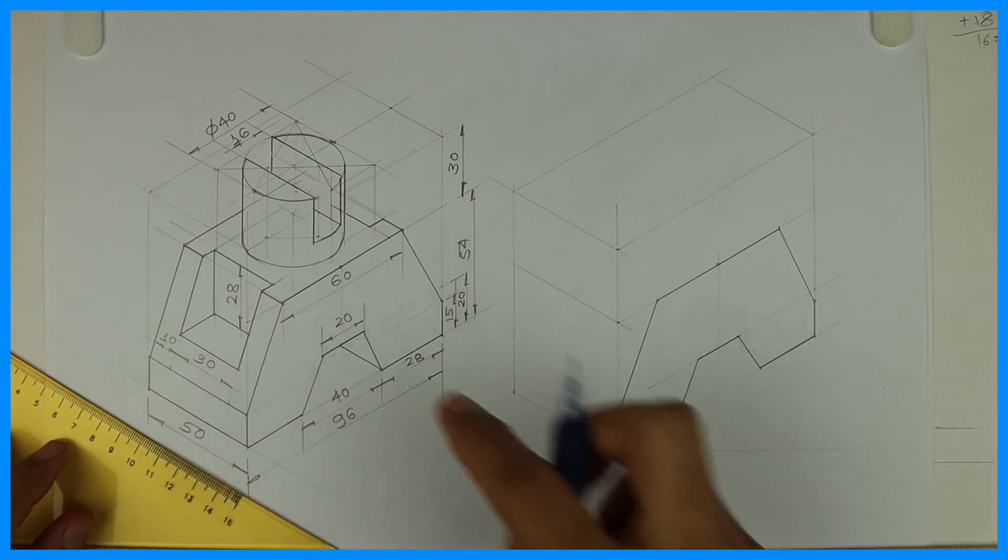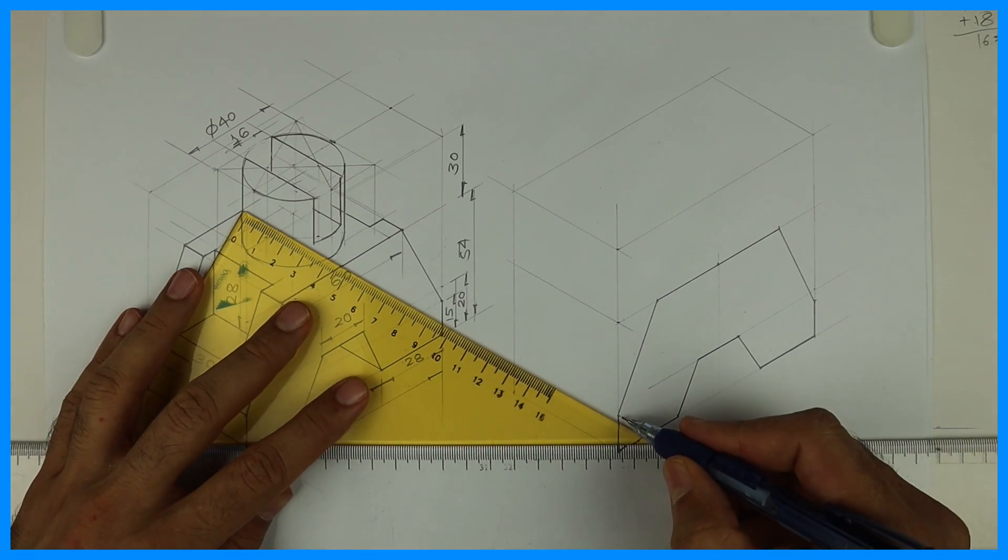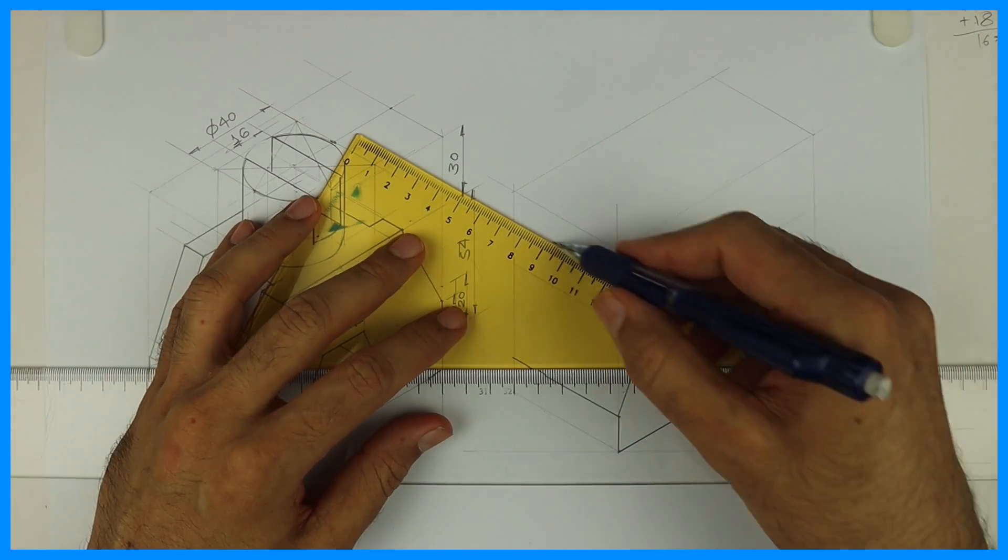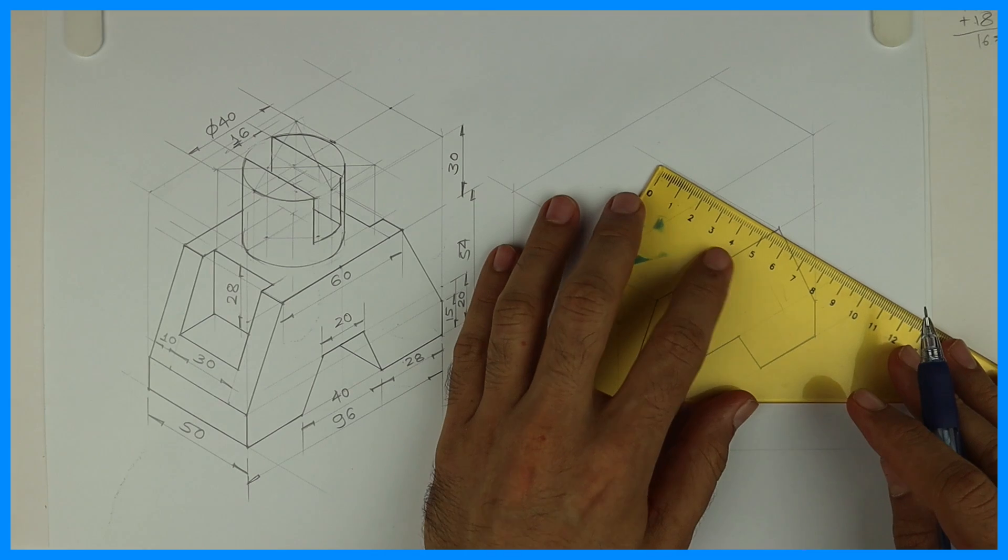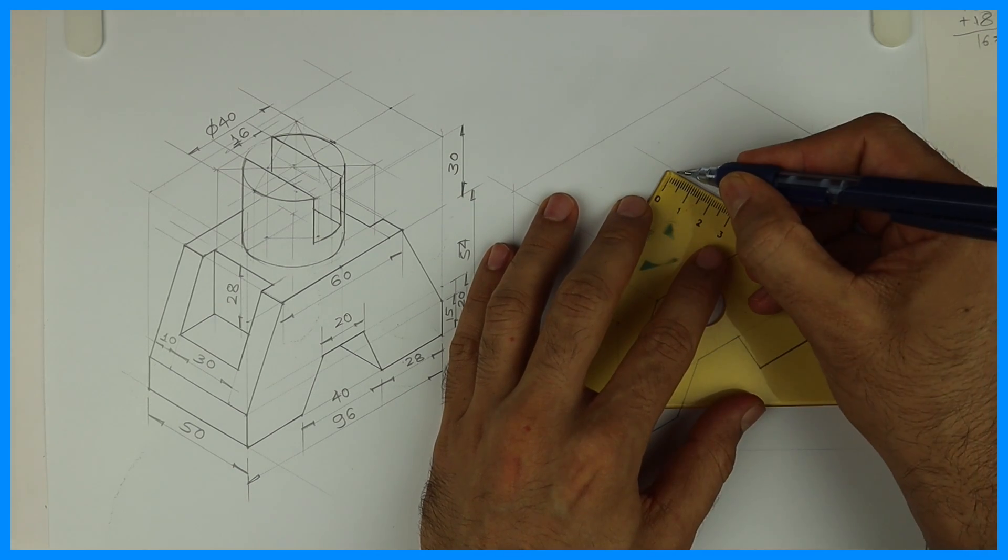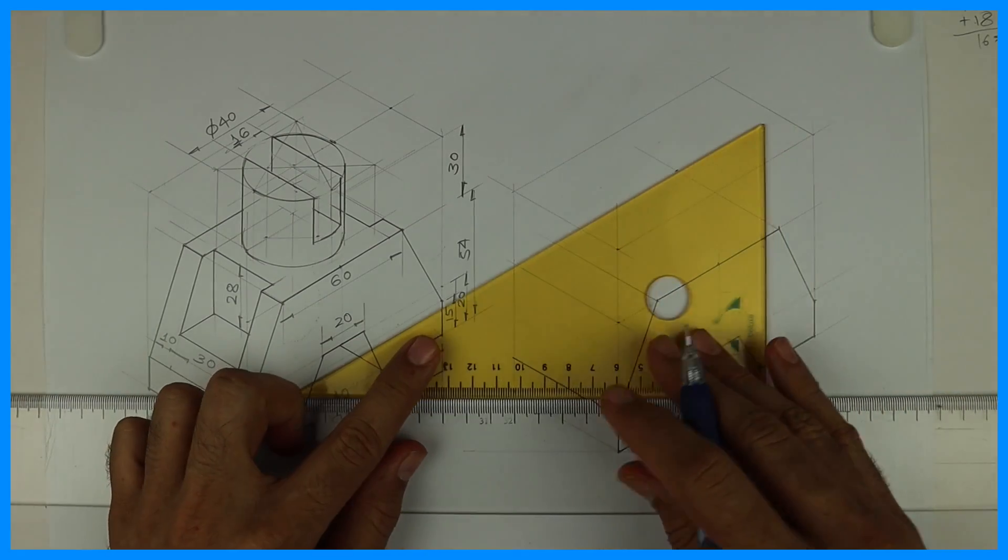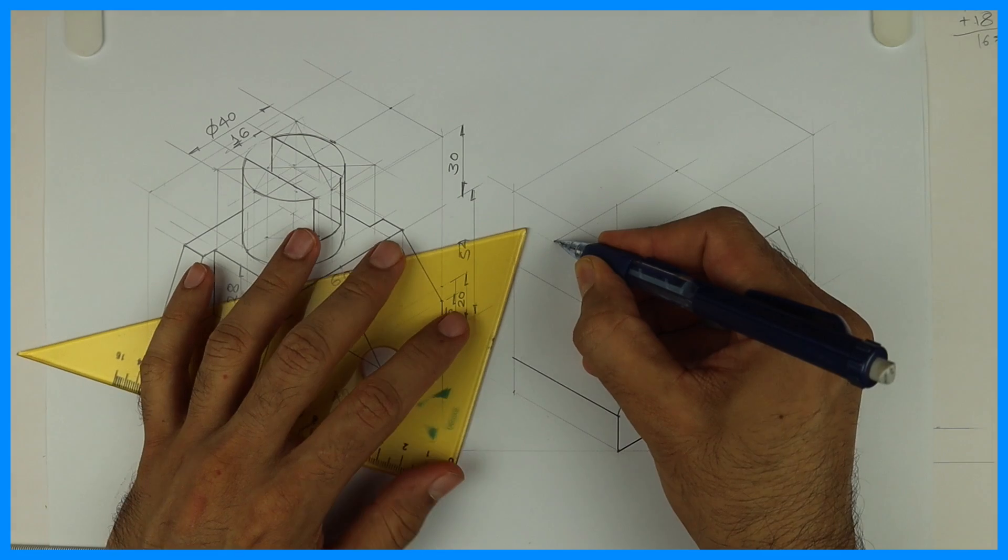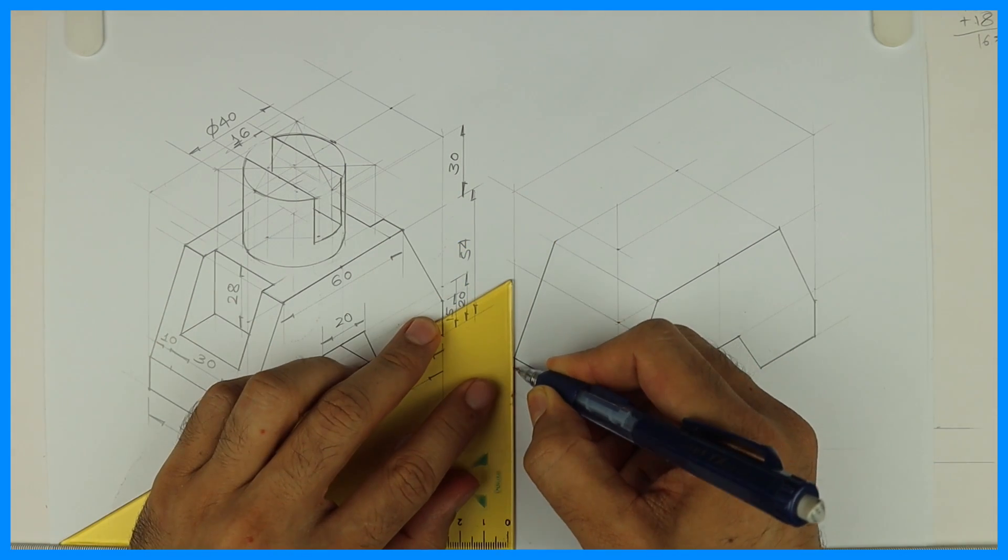Then you take all these points behind by - see this front portion is done. This is behind by 50. So take all the points behind by 50. So first we are trying to draw only the lower portion. Let's say from here you take 50-50 and draw a line like this. Then you join this way. So we are done with the bottom portion, part 1 we can say.